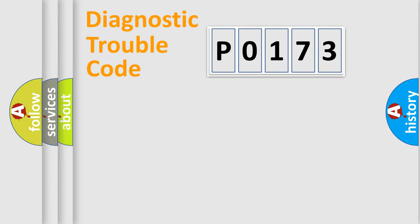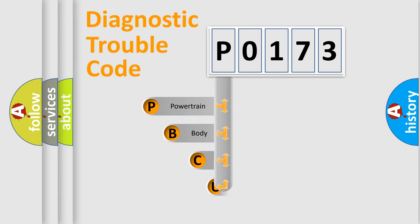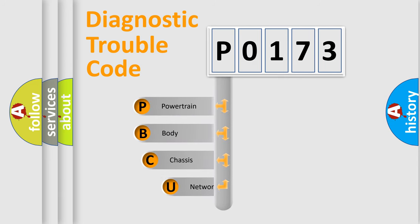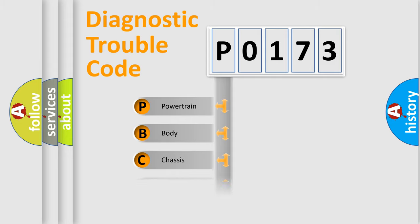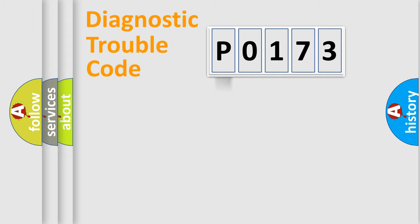Let's do this. First, let's look at the history of diagnostic fault code composition according to the OBD2 protocol, which is unified for all automakers since 2000. We divide the electric system of automobile into four basic units: Powertrain, body, chassis, network.